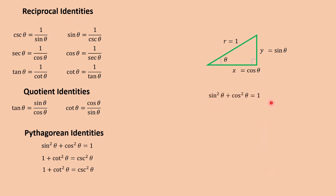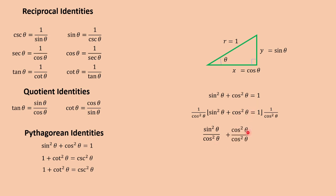From the equation sine squared theta plus cosine squared theta is equal to 1, let us multiply both sides by 1 over cosine squared theta. So we have sine squared theta over cosine squared theta plus cosine squared theta over cosine squared theta is equal to 1 over cosine squared theta. By quotient identities, sine squared over cosine squared is tangent squared theta. Cosine squared theta over cosine squared theta is equal to 1. And 1 over cosine squared theta is equal to secant squared theta by reciprocal identities.